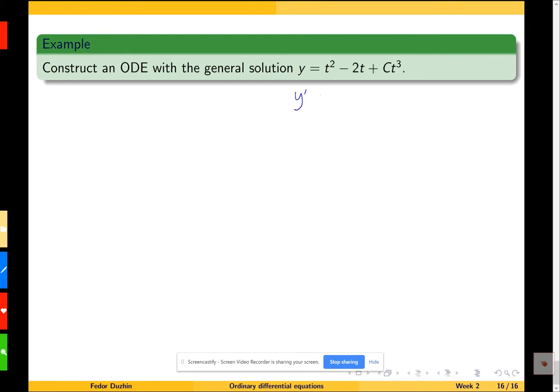Then y' is going to be 2t - 2 + C times 3t². But the problem here is that these two formulas, the one for y and the one for y', are not differential equations because they involve this unknown parameter C.